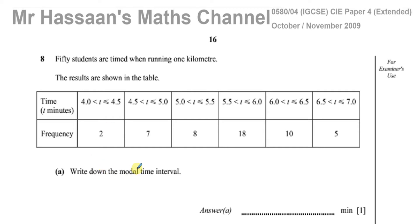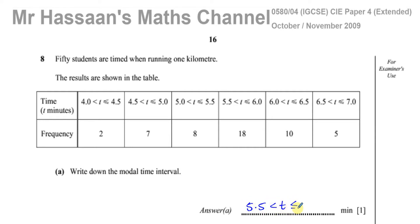So the best we can do is give what's called the modal class or the modal group. They won't actually ask you for the mode in a question like this because you don't know what the values are. We can find the group which has the most number of entries — the frequency tells you that. The group with the highest frequency is 5.5 to 6, so time is between 5.5 and 6 — that is the modal interval.